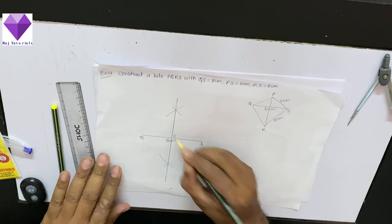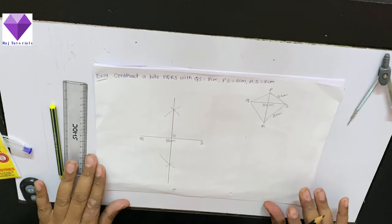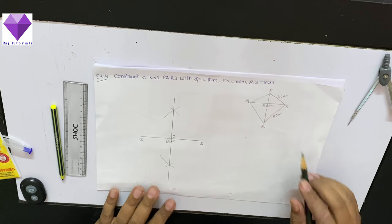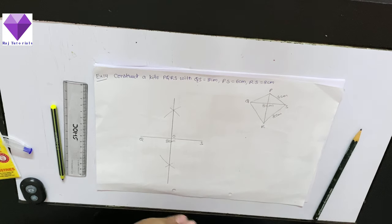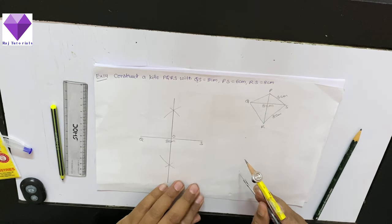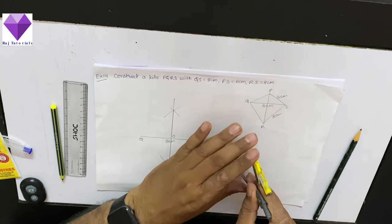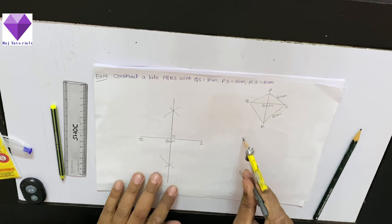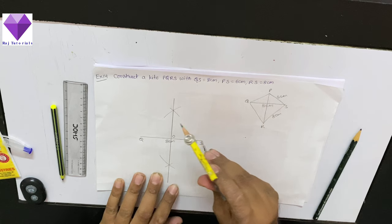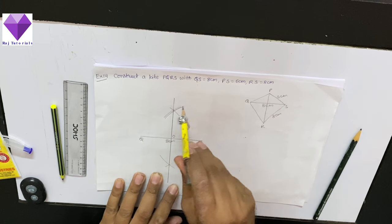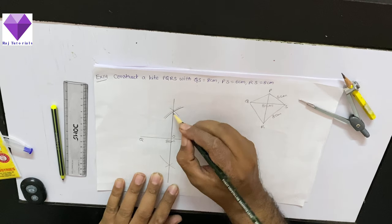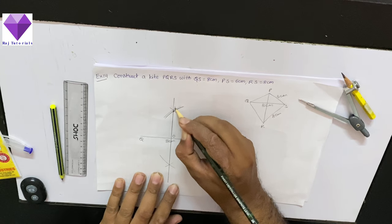This center O point I have got. Now, with S as center and radius 6 cm, I have to draw an arc which touches this line in the top part as P. I am taking 6 cm radius and with S as center, I am marking one point here, which is my P point.